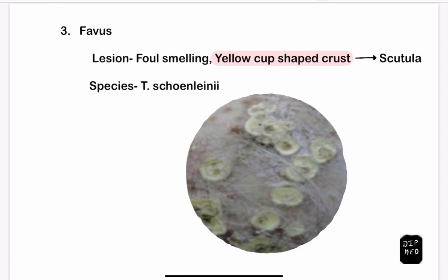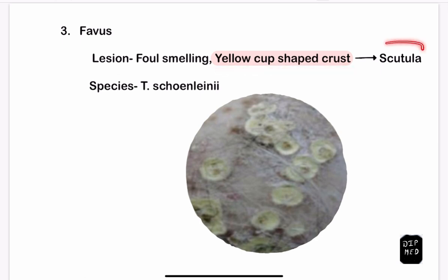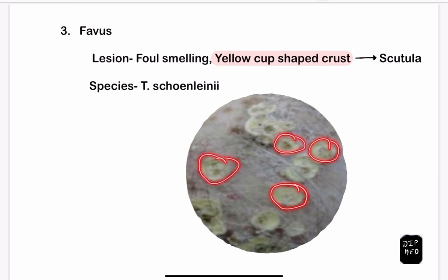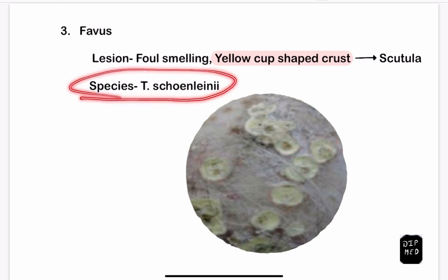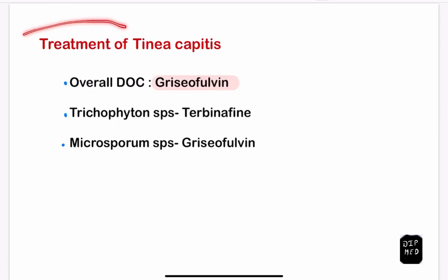The third type is favus. Here the lesion is described as a foul-smelling, yellow cup-shaped crust also known as a scutula. In this picture you can appreciate these yellowish cup-shaped crusts. The species causing this type is Trichophyton schoenleinii.